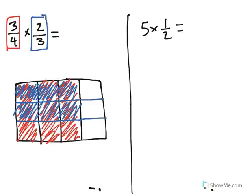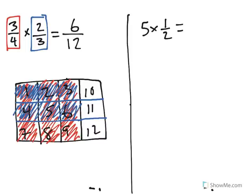I'll continue that across because that's important as well. The question we're trying to ask is: what fraction of the total shape has both colors shaded? Counting the overlap, I get 6 pieces out of 12 total. So 6 twelfths is shaded with both colors — that is how multiplying fractions works and what it looks like.